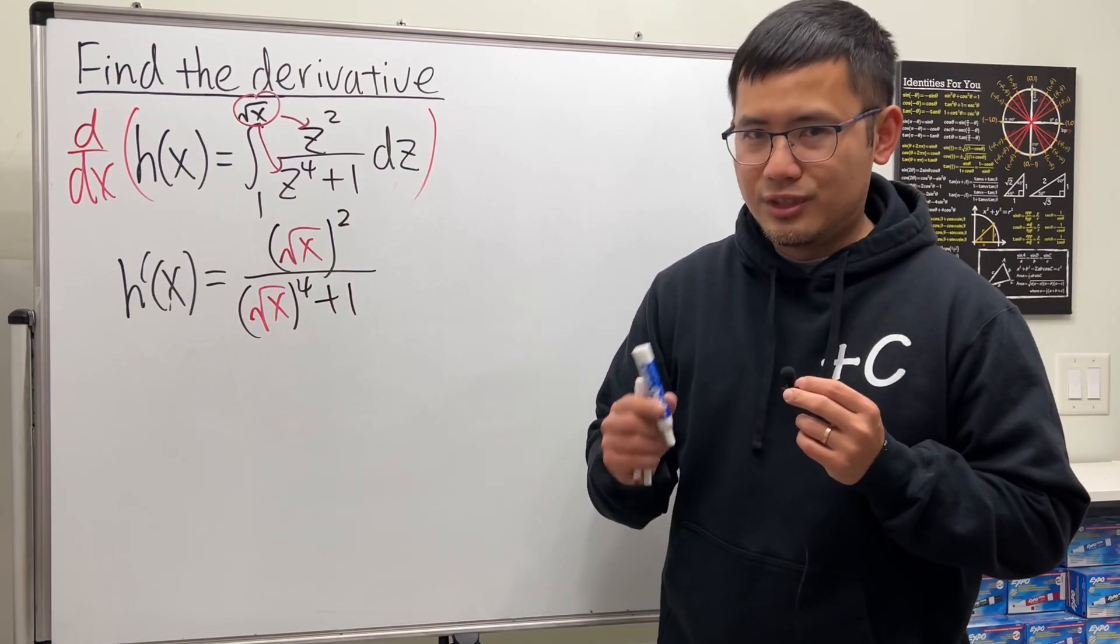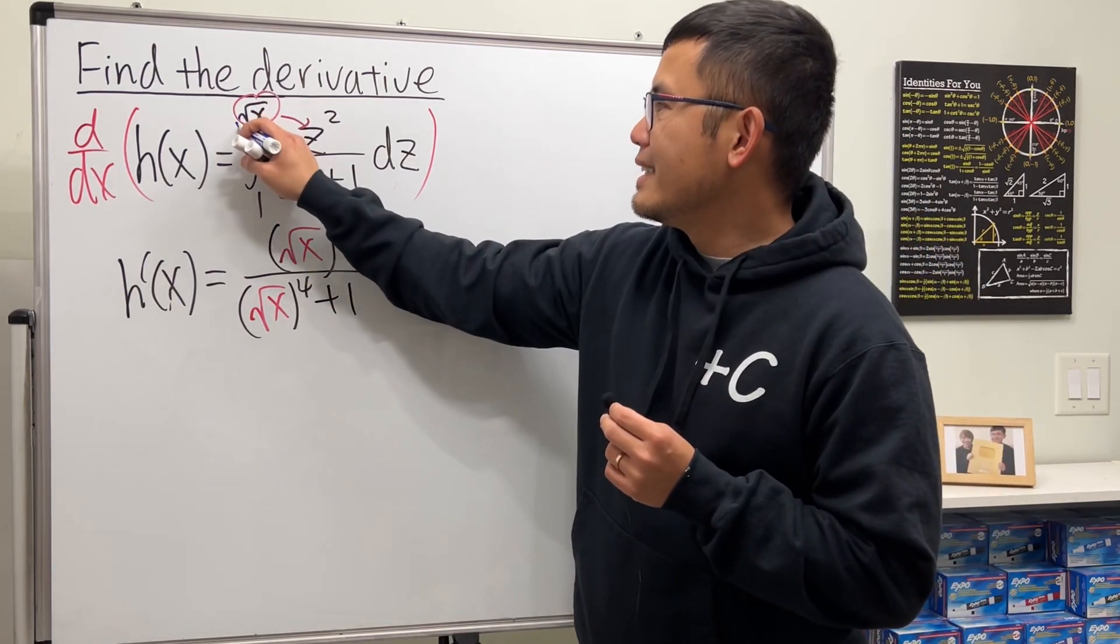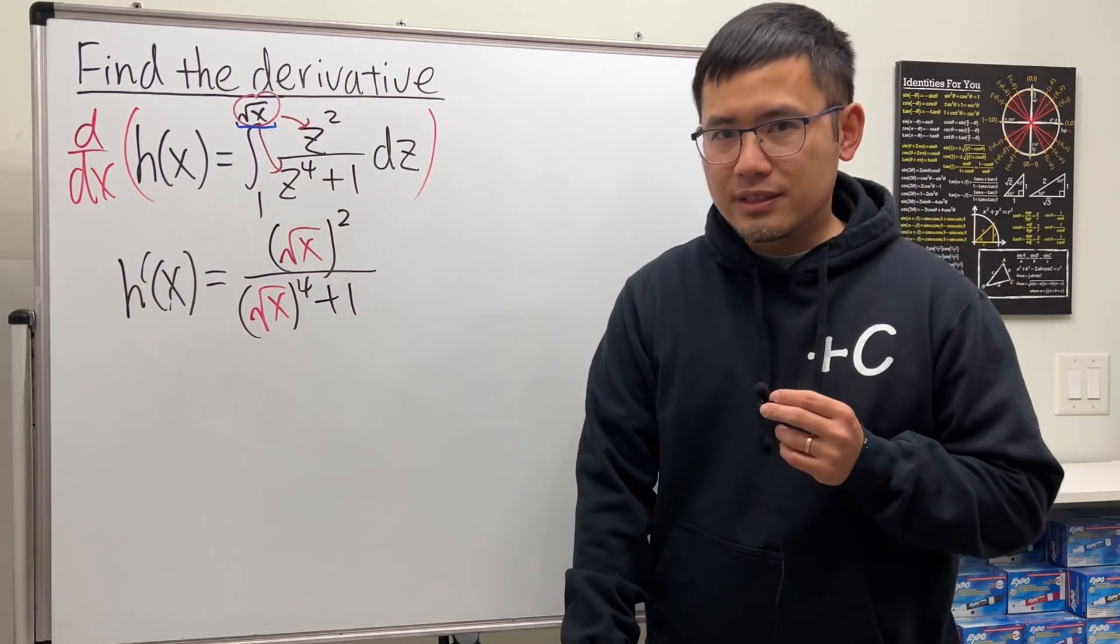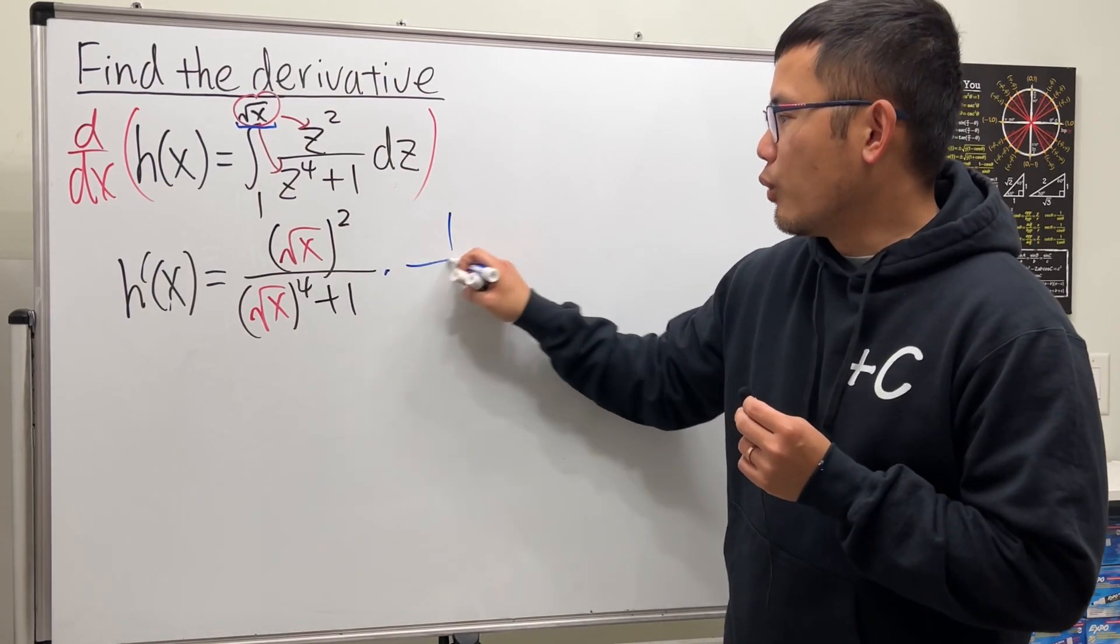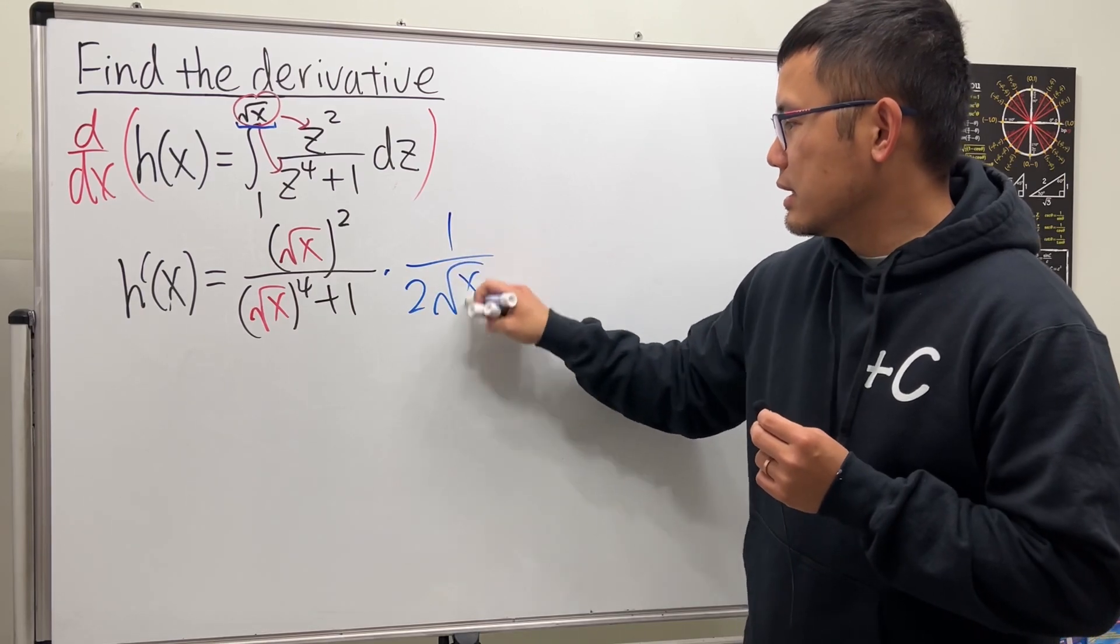And remember, use the chain rule. So multiply by the derivative of square root of x, which is equal to 1 over 2 square root of x, like so.